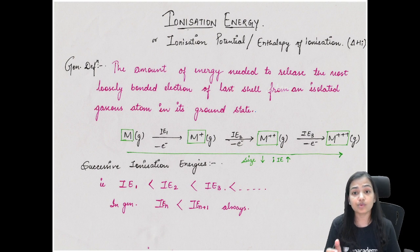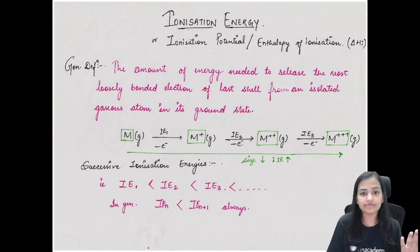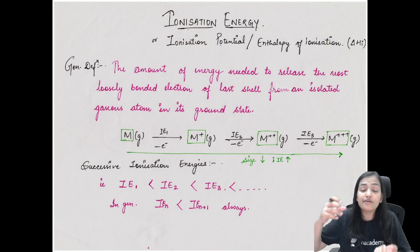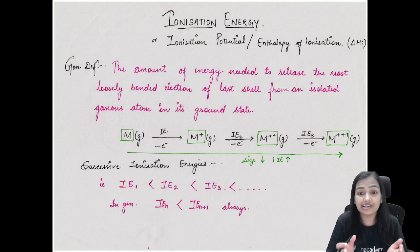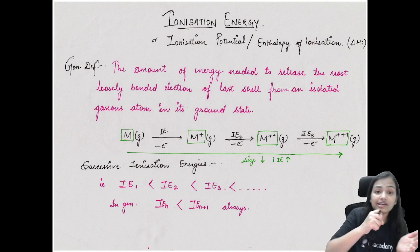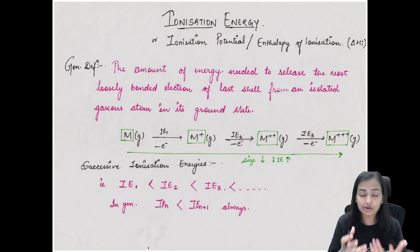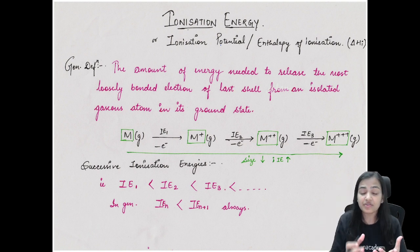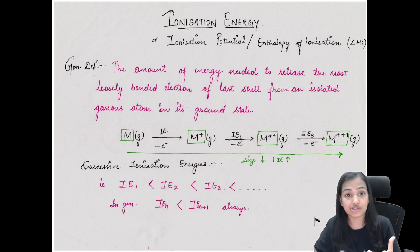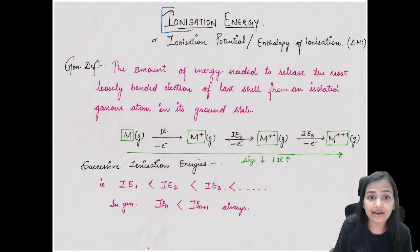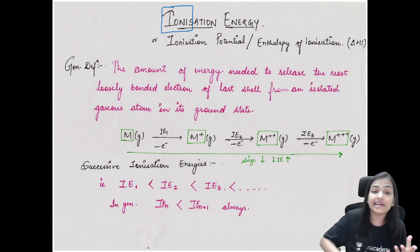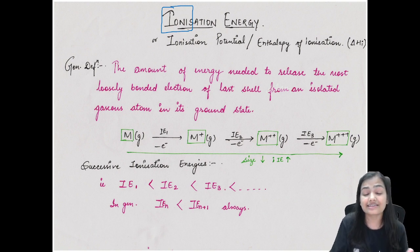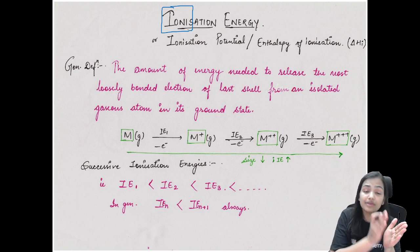Ionization energy can also be termed as ionization potential - the potential or power required to remove an electron from the outermost loosely held shell. Whatever amount of energy is required to remove an electron from the outermost shell of an atom which is loosely held is known as the ionization energy. The word ionization tells us we want to create ions - this is an atomic property.